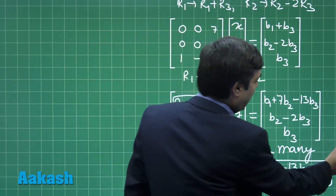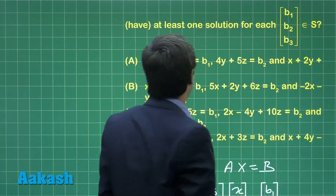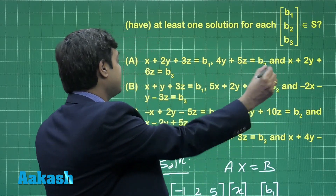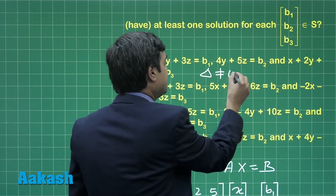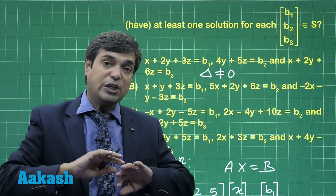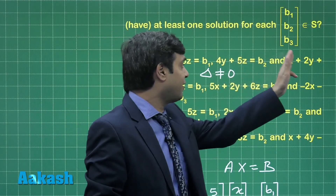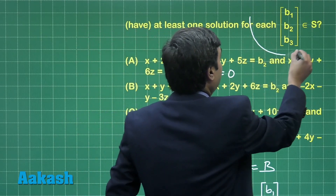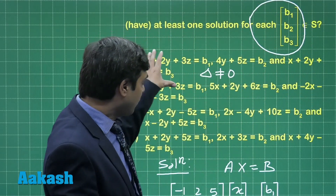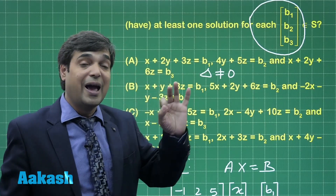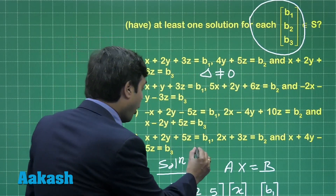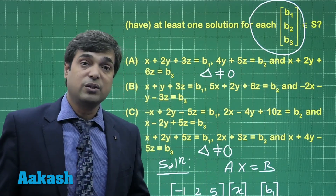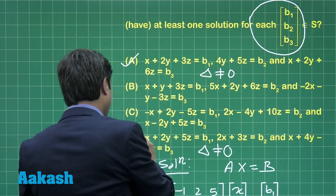Moving to the options: Option A has 3 equations whose determinant is nonzero. Once the determinant is nonzero, there is a unique solution for whatever is written on the right side — b1, b2, b3. So for each b1, b2, b3 in S, Option A has a unique solution. Similarly, Option D also has a nonzero determinant, giving a unique solution. Hence A and D are correct options.